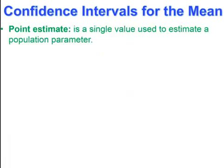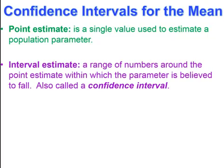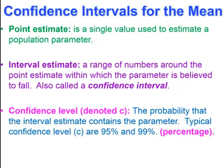Working with Confidence Intervals, we have a point estimate. The point estimate is a single value used to estimate the population parameter — it could be the mean of the population, the proportion of the population, a standard deviation, etc. The interval estimate is a range of numbers around that point estimate within which the parameter is believed to fall. It's also called a Confidence Interval. The Confidence Level, denoted lowercase c, is the probability that the interval estimate contains the parameter.